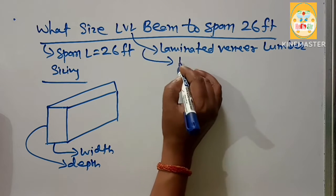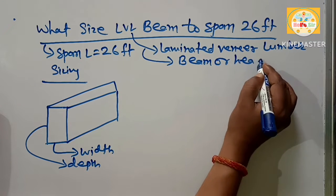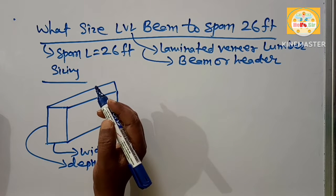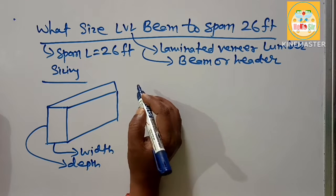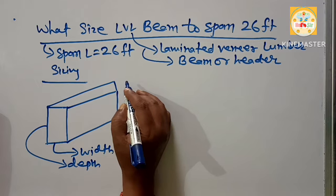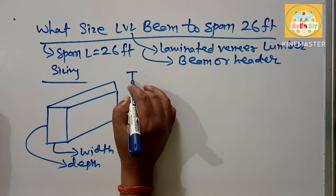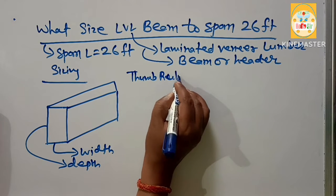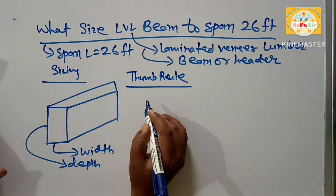It is used as beam and header in building construction. The accurate LVL beam size needed to span 26 feet depends on several factors like building code. But here we calculate according to thumb rule. What is the LVL thumb rule to find out correct LVL beam size?